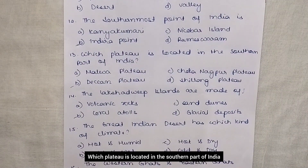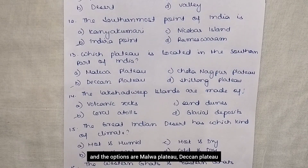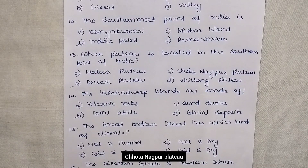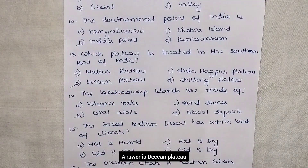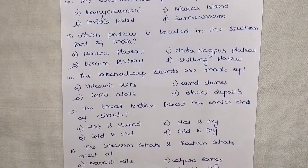Which plateau is located in the southern part of India? The options are Malwa Plateau, Deccan Plateau, Chota Nagpur Plateau, or Shillong Plateau. Answer is Deccan Plateau.